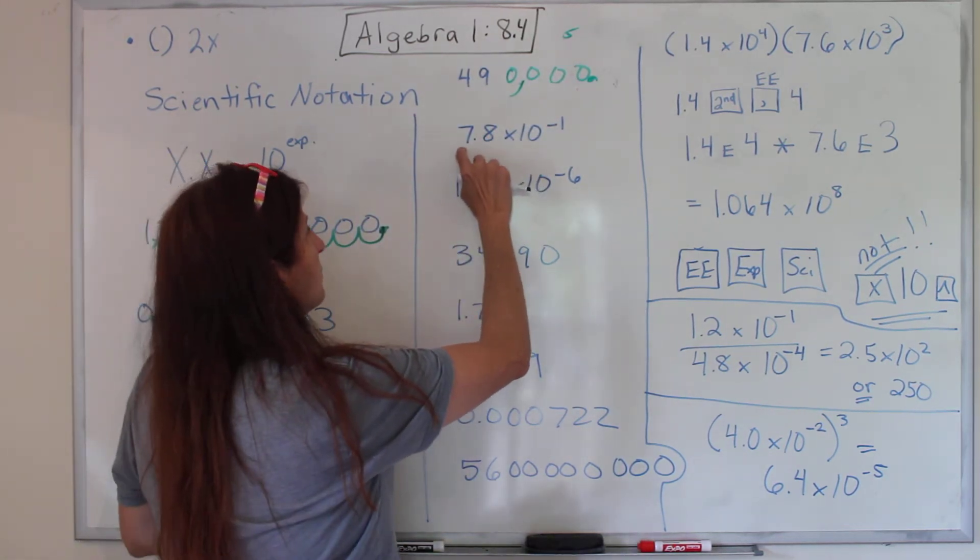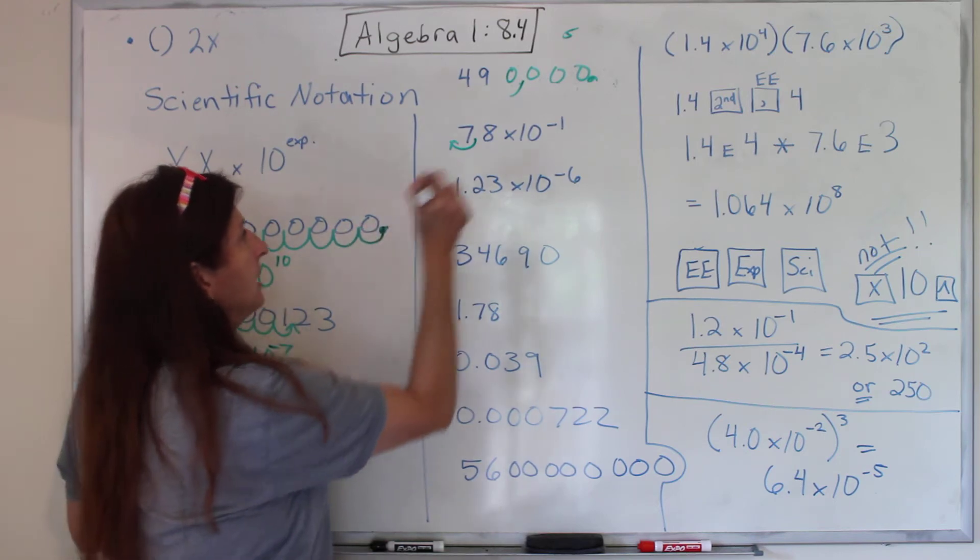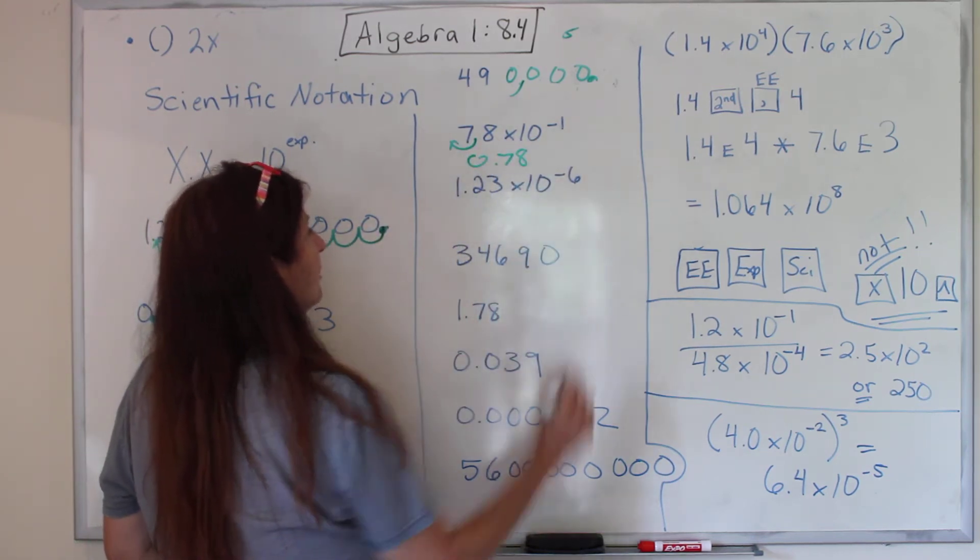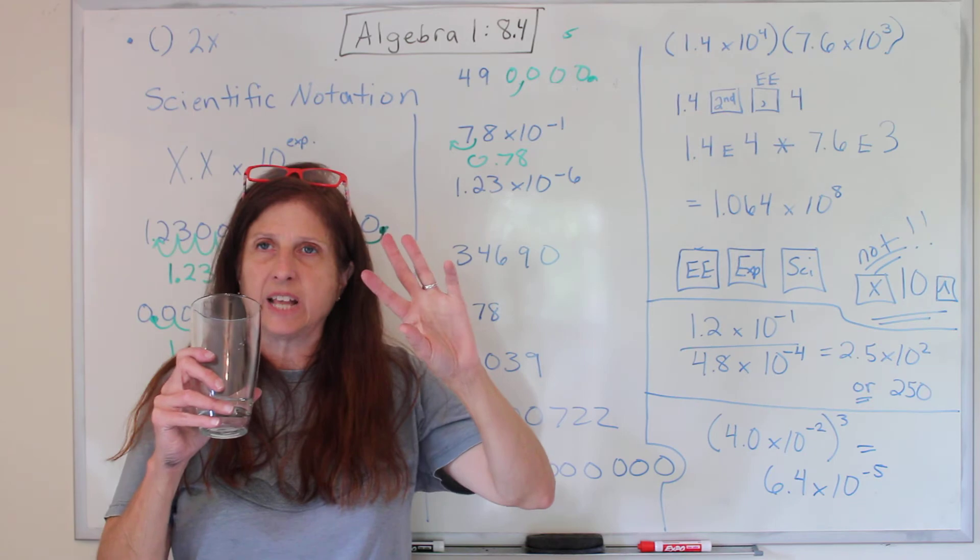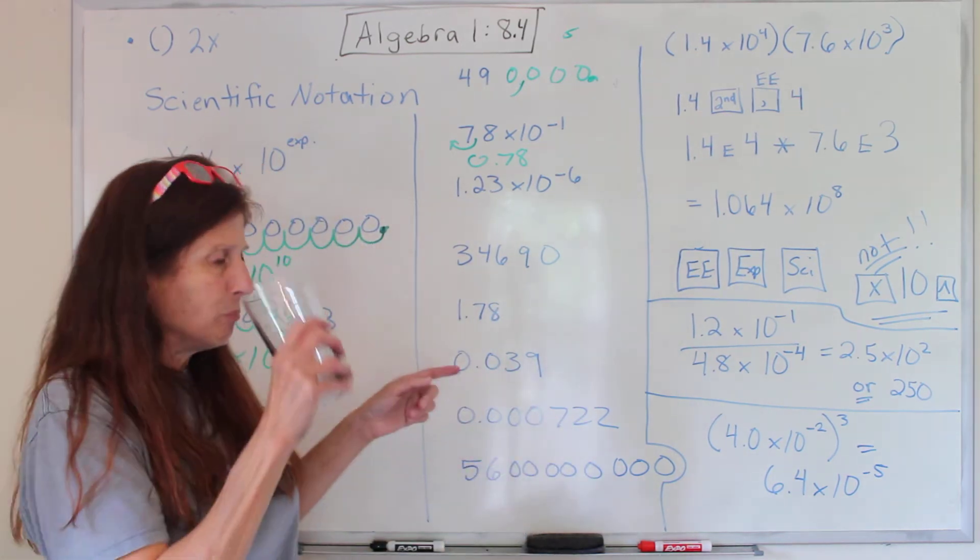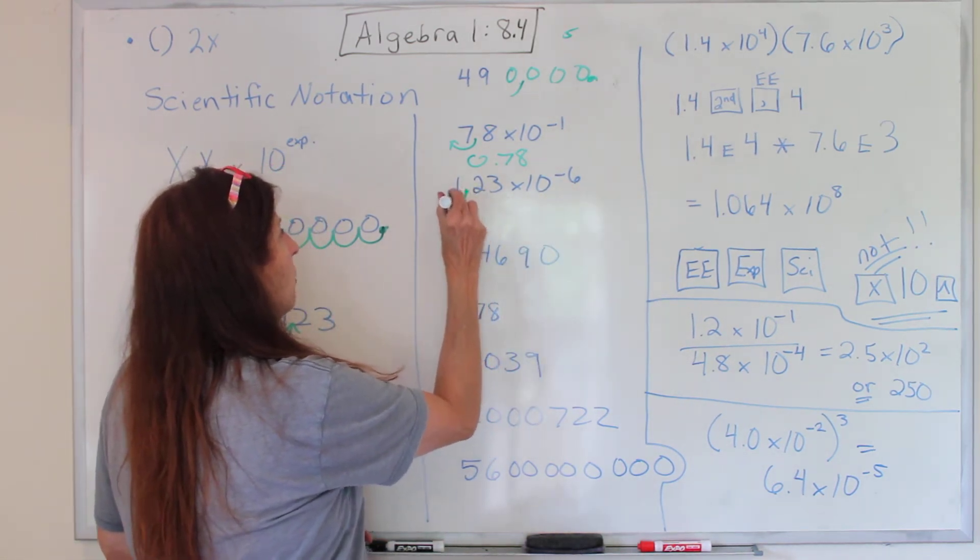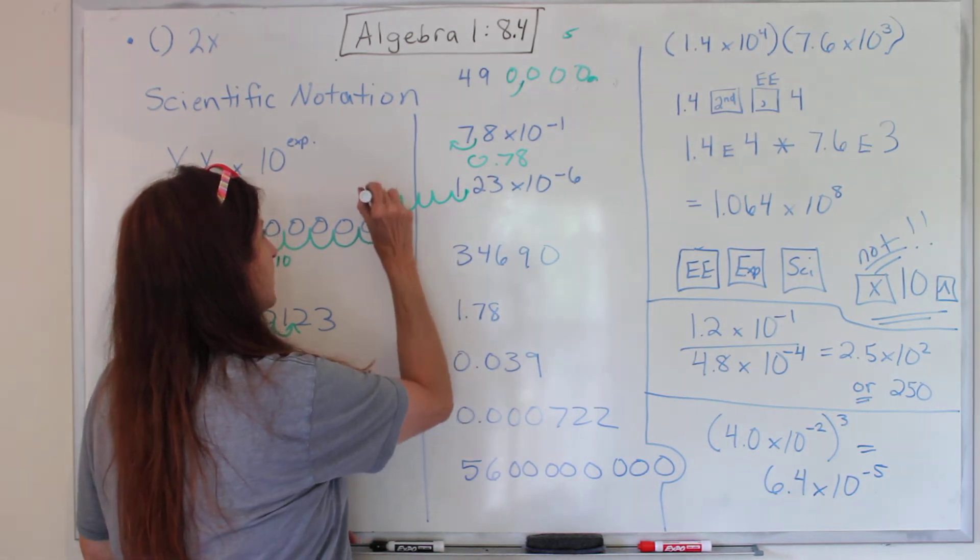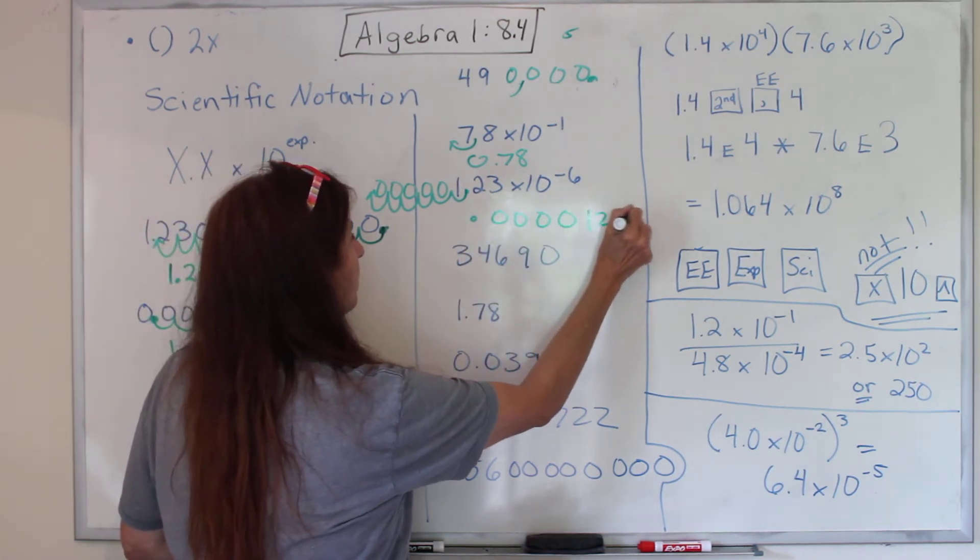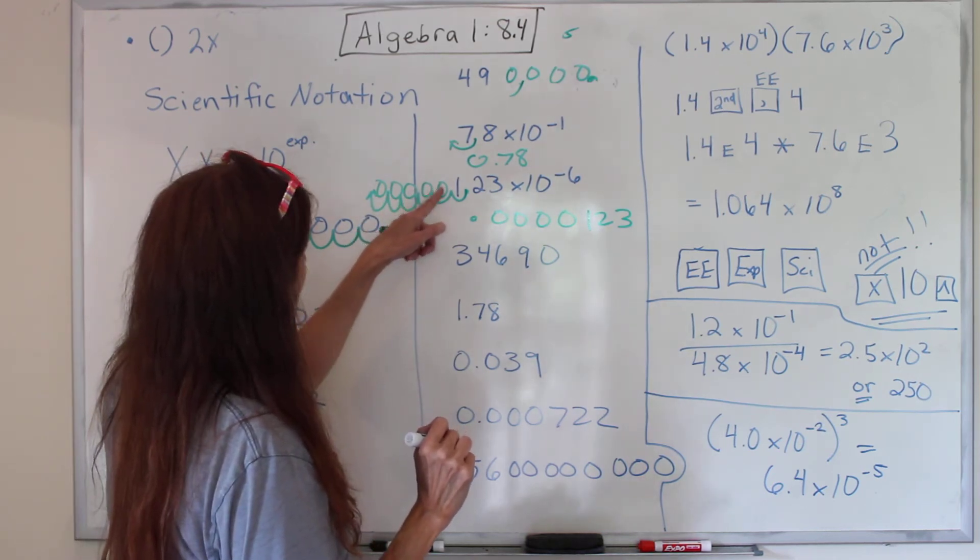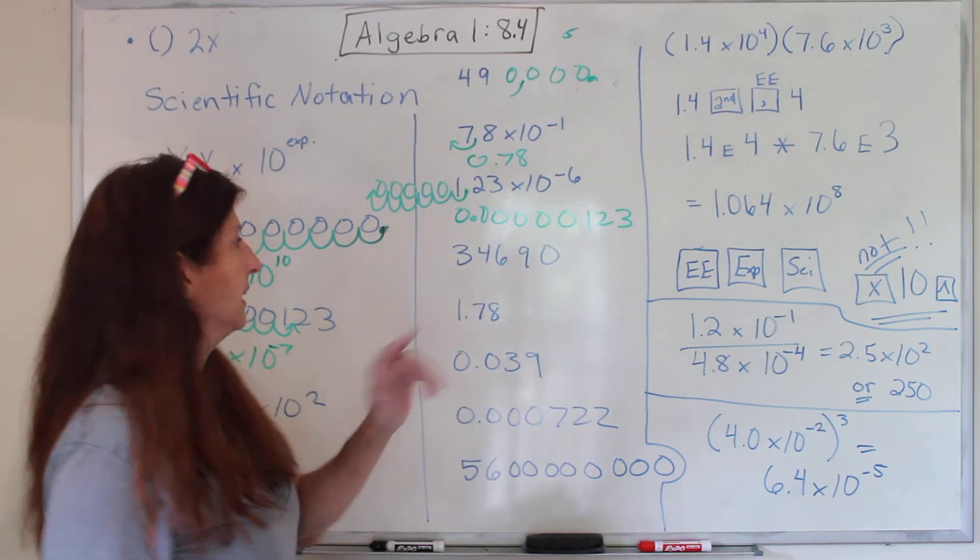All right. How about this one? 7.8 times 10 to the negative one. It's negative, so I have to make it smaller by going that way. So it's going to be 0.78. Is it taken out of scientific notation? Once I teach you how to do this on the calculator, I think your calculators will take it out of scientific notation for you. I think you can put it in, and it will tell you the answer. Okay, this one. Negative six. So we're going six times this way. One, two, three, four, five, six. Put zeros in the holes, and we can see it's 0.0000123. One, two, three, four, five. One, two, three, four, five. There. Now I did it right. And you can put another zero there if you want, just to make it look nice.